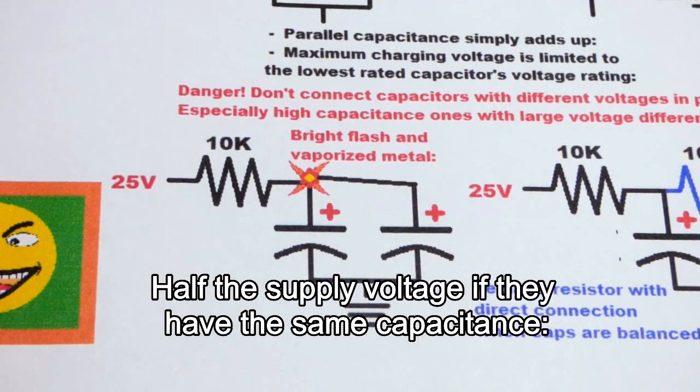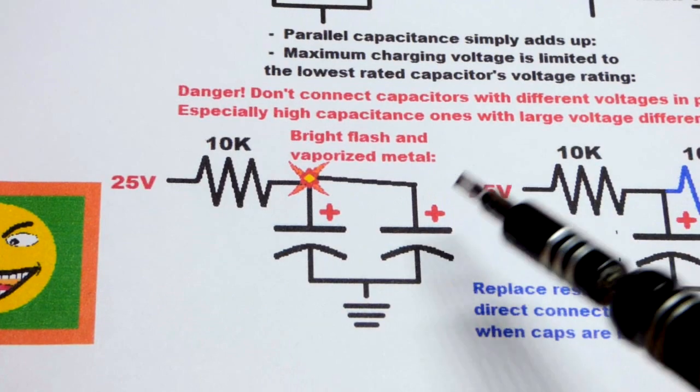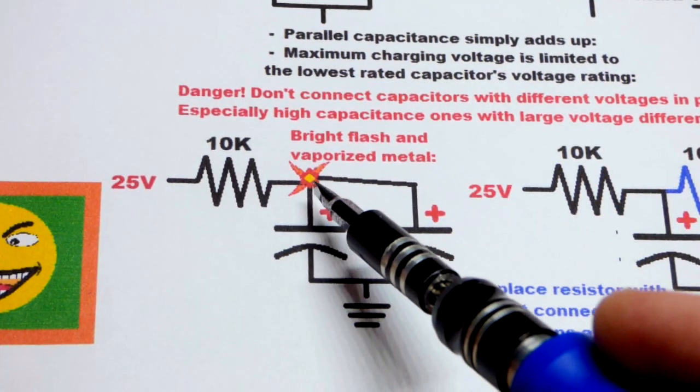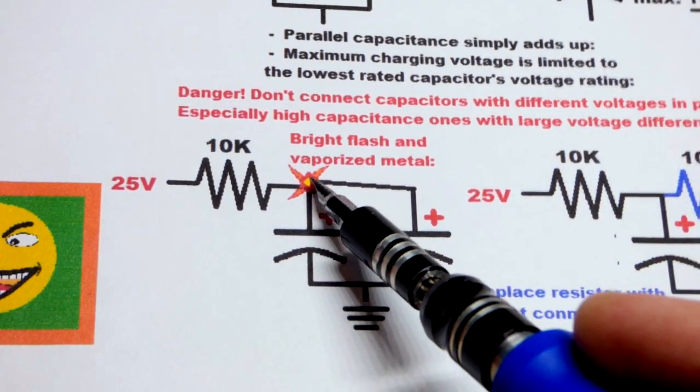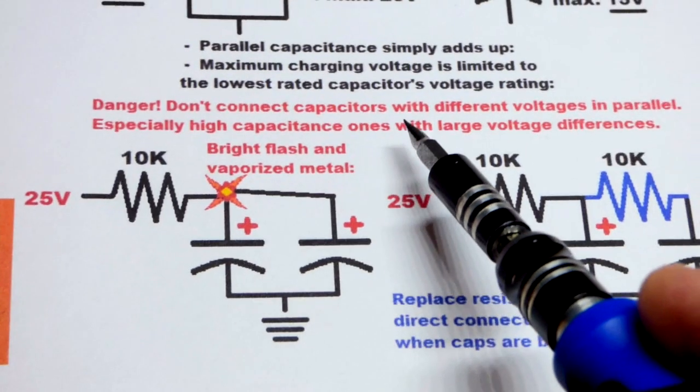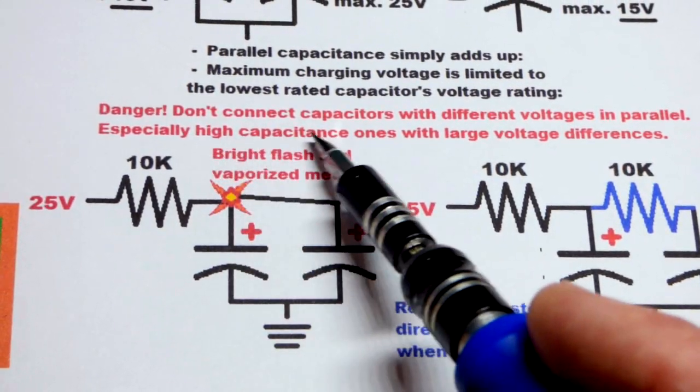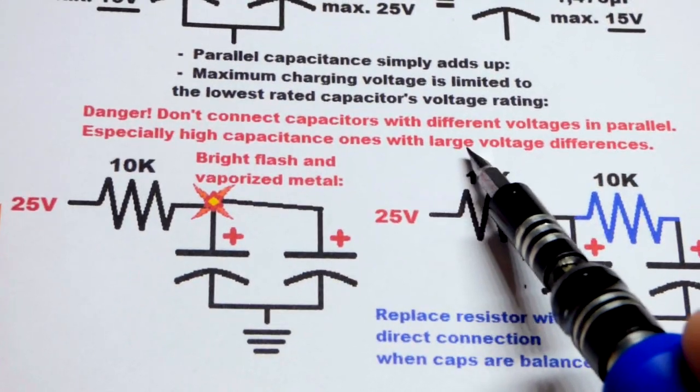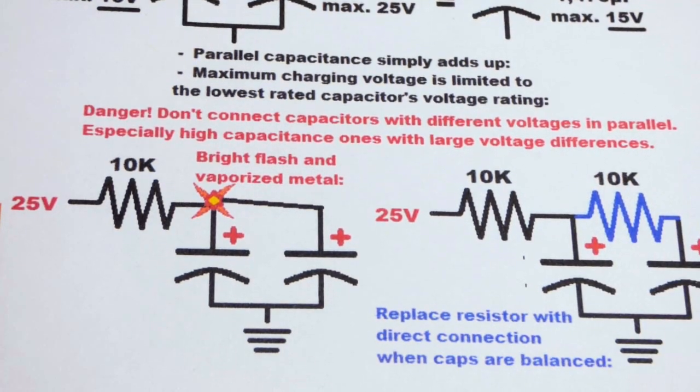But in this case, the supply is also going to start charging them right away. But in any case, that is instant, and so it's a relatively high amount of current, especially as you have higher value capacitors and they have a larger voltage difference. It's going to get worse.